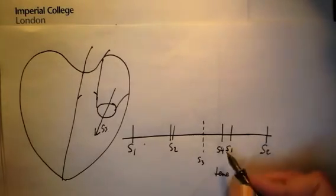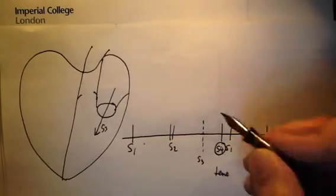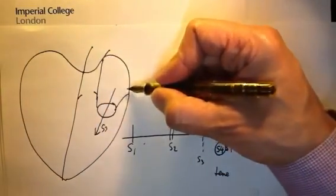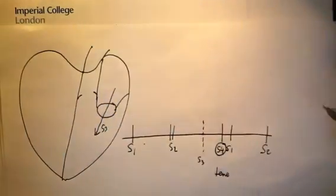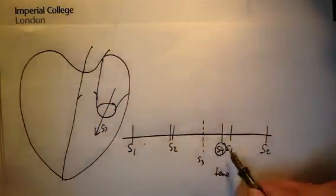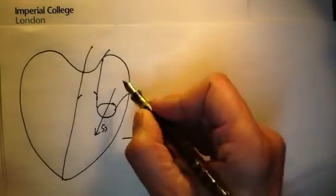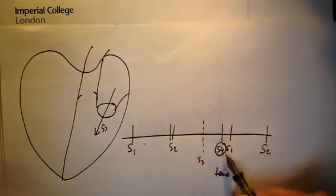The fourth heart sound is the atrium contracting against a stiff ventricle. If you have hypertension causing a stiff ventricle, then you might hear a fourth heart sound.